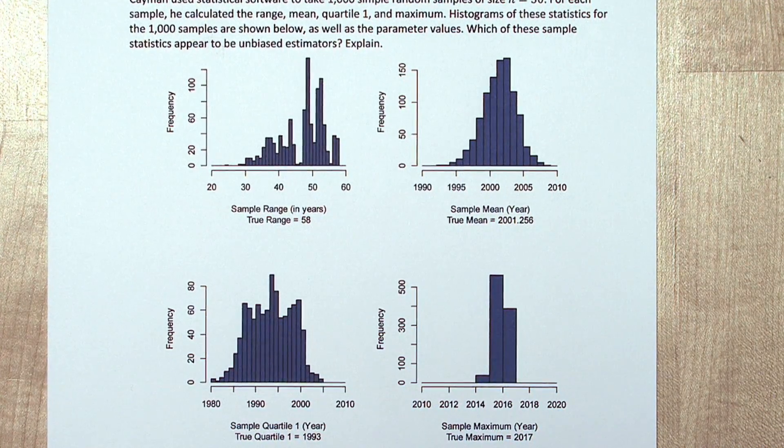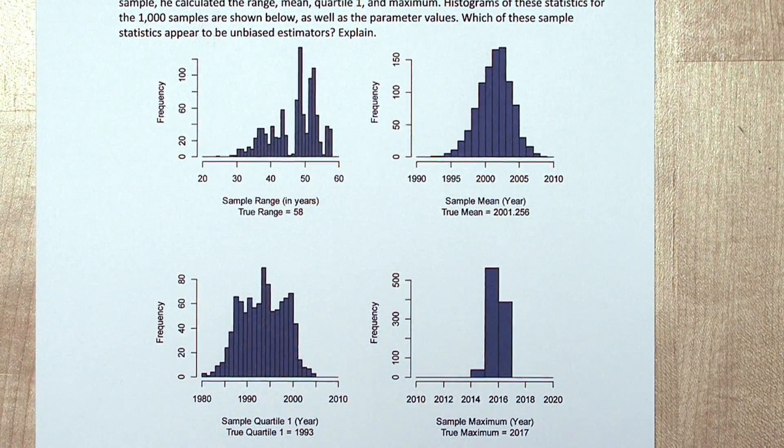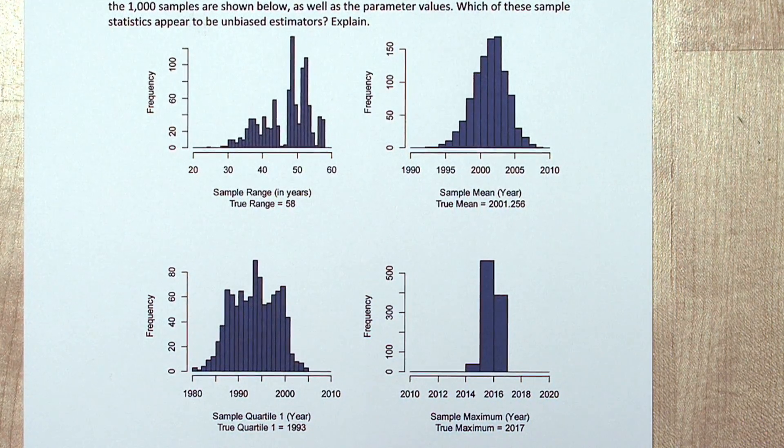Each of these represents an approximate sampling distribution. Let's start by drawing the true parameter values on each of them.